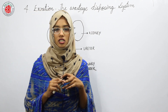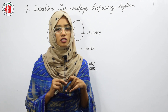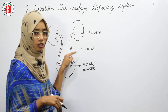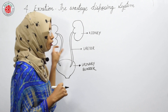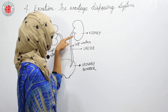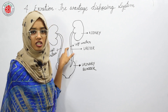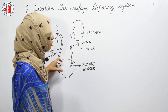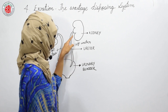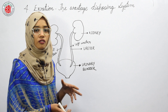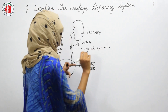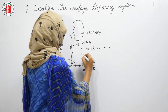Now let us talk about the second part of the excretory system: the ureter. After the formation of urine in the kidneys, it passes into the ureter. Ureters are tube-like structures and we have a pair of them — a left ureter and a right ureter. They arise from the hilus region of the kidneys and open into the urinary bladder. The length of the ureter is 30 cm, and the movement of urine through it is achieved by peristaltic movement.